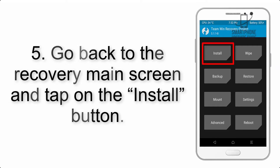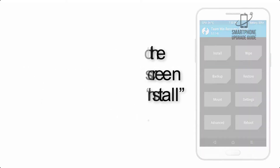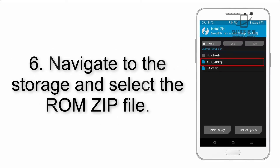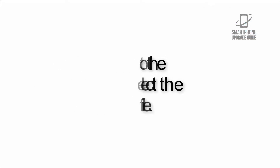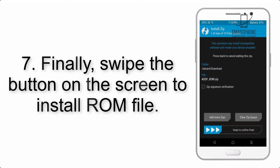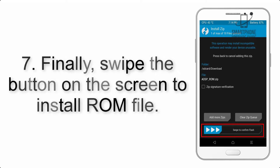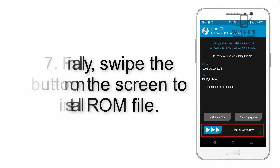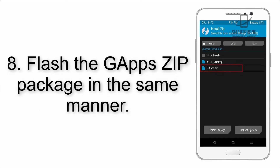Step 5: Go back to the recovery main screen and tap on the Install button. Step 6: Navigate to the storage and select the ROM zip file. Step 7: Finally, swipe the button on the screen to install the ROM file.